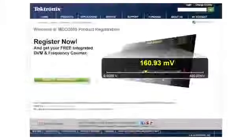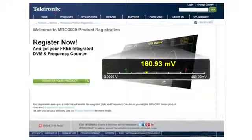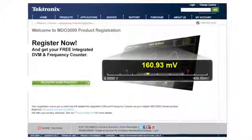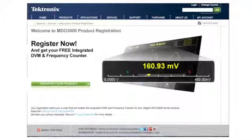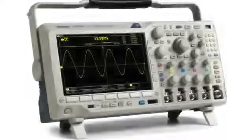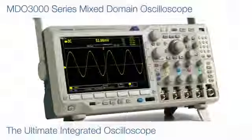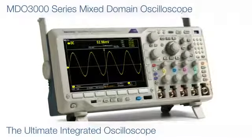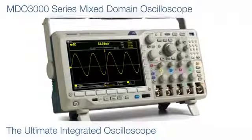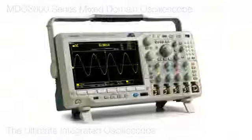The voltmeter function is available on any MDO 3000 and is activated when you register your MDO 3000. The MDO 3000 is as integrated as your designs, and its built-in DVM delivers quick voltage and frequency measurements without leaving your oscilloscope.